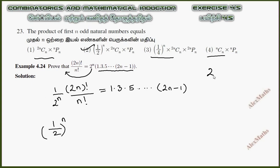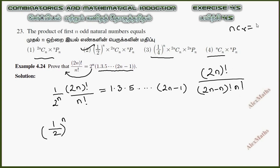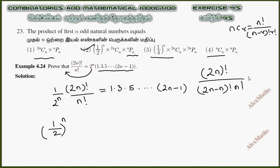2nCn equals (2n)! divided by (2n − n)! times n!. That's why the nCr formula is n! divided by (n − r)! times r!. This product is nPn, giving us (2n)! divided by n!.